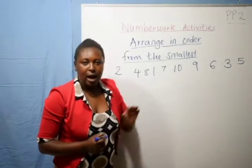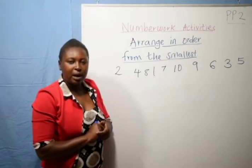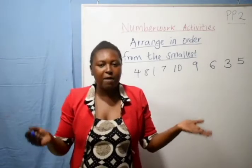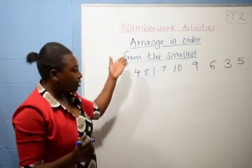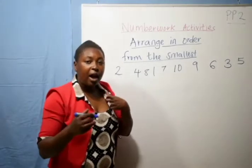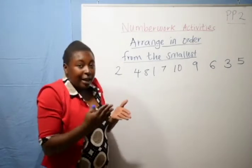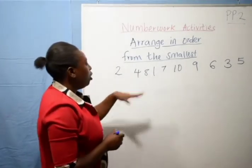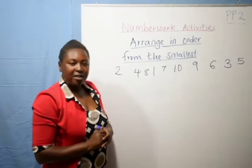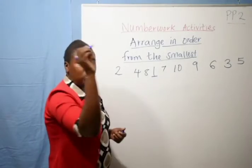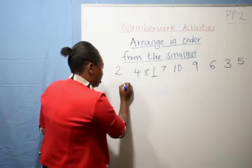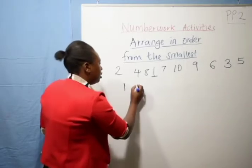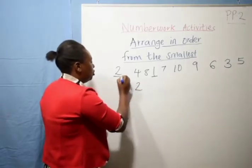Let us arrange these numbers. Which is our first number — the smallest number? When we talk about the smallest number, we are looking at the number of values. The more the number, the larger it is; the fewer the values, the smaller the number. We have two — do we have one somewhere? Yes, we have number one. Once you write one, you put a dash on it.